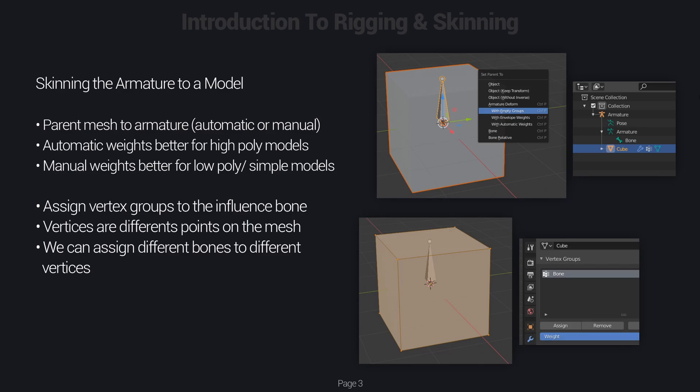When it comes to skinning a model, what I usually do is use the vertex groups method and manually assign the vertex groups to the mesh. You can also use the automatic method, which is better for more complex models — like a high poly character where you want the arms and legs to bend realistically. But since we're going to be using very simple models, the manual method is better. We are going to manually assign each vertex group of the mesh to specific bones.